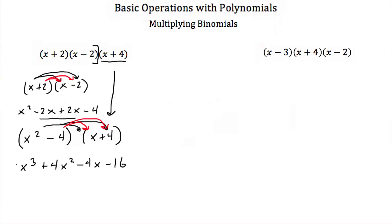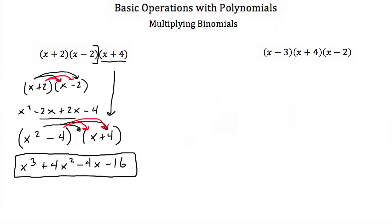So the solution for x plus 2 times x minus 2 times x plus 4 is x cubed plus 4x squared minus 4x minus 16. Let's try this again — here we have three binomials again, and I'm just going to take the first two to start with.